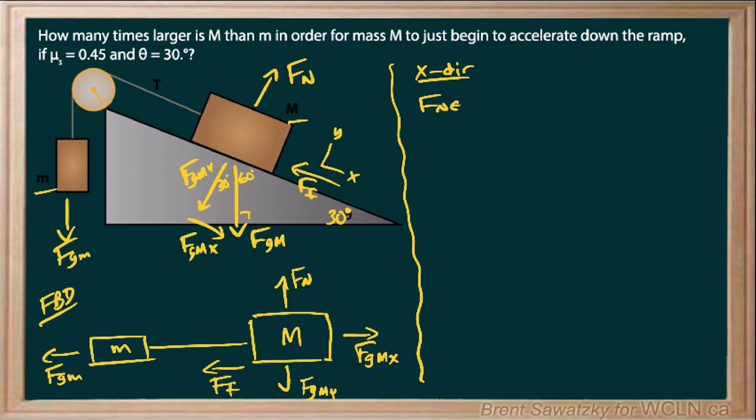Starting off with our tried and true F net equals M A. Now, what are the net forces here? Let's refer to our modified free body diagram and pulling to the right, we have FG capital M X. And that's the only thing pulling right. Pulling left, we have our force of friction and we also have our M G little M. And that gives us our mass times our acceleration. And we have to remember, we're talking about the entire system.